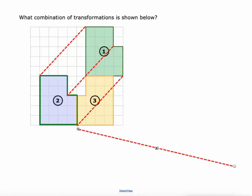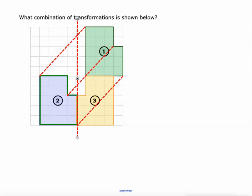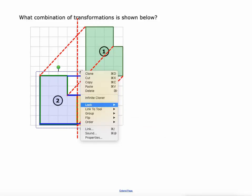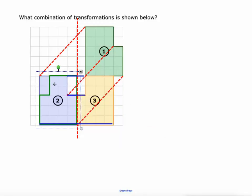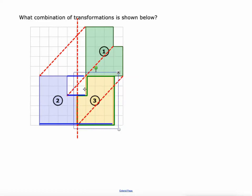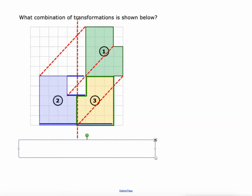And then to get from figure two to figure three, I'm going to reflect over this line right here — so another reflection. We connect these corresponding vertices with blue lines, and again all of those blue lines are cut in half by the red line of reflection and they all meet the red line of reflection at a 90 degree angle. So our answer here is a translation then a reflection.